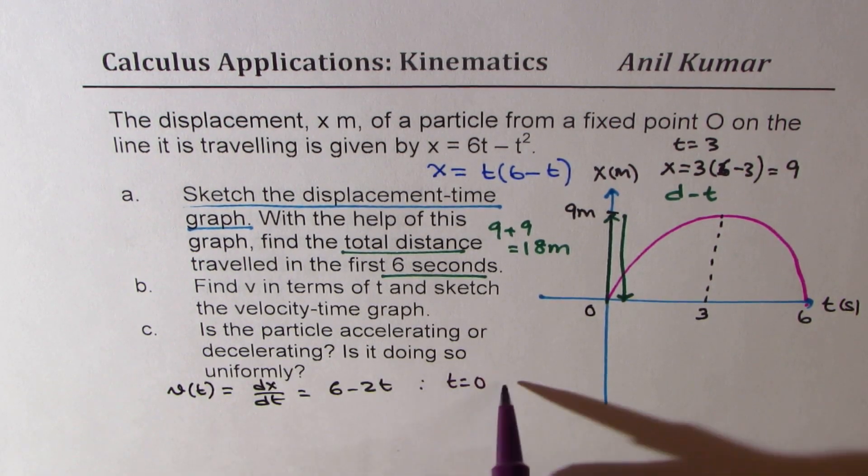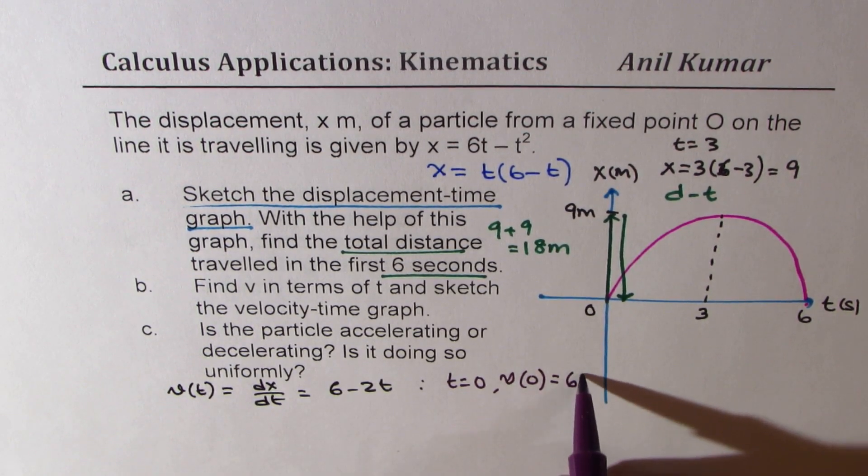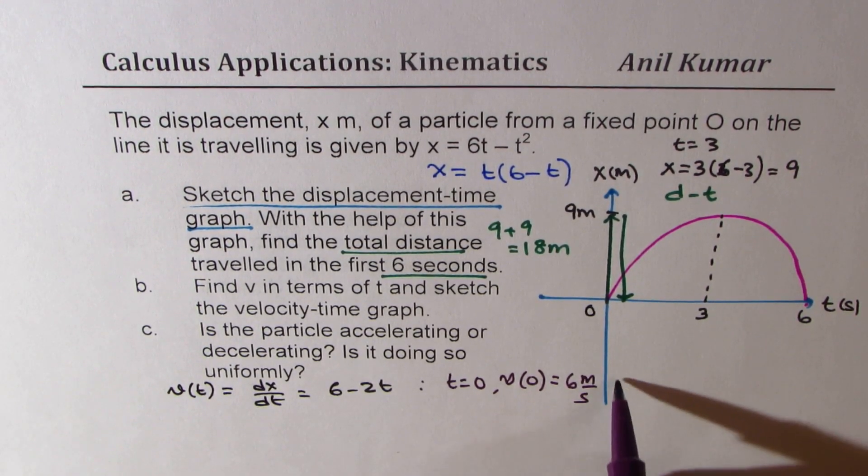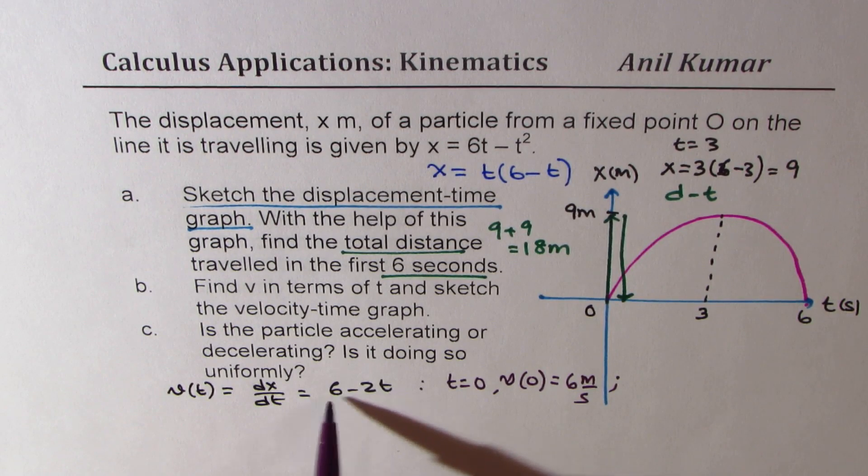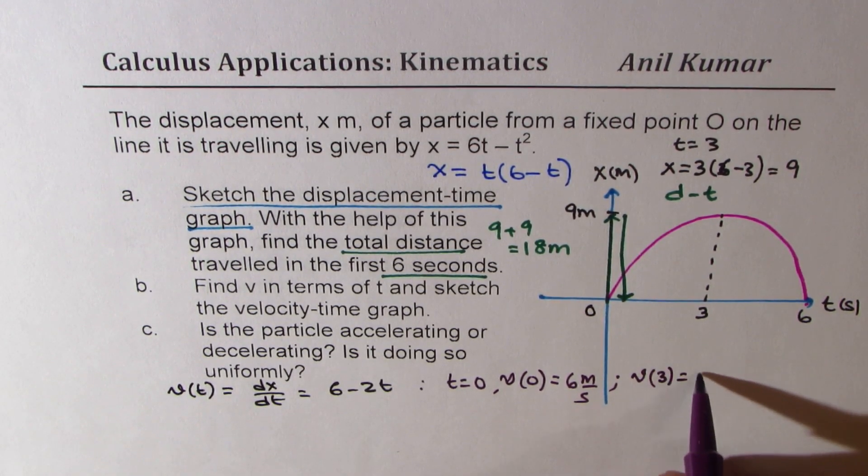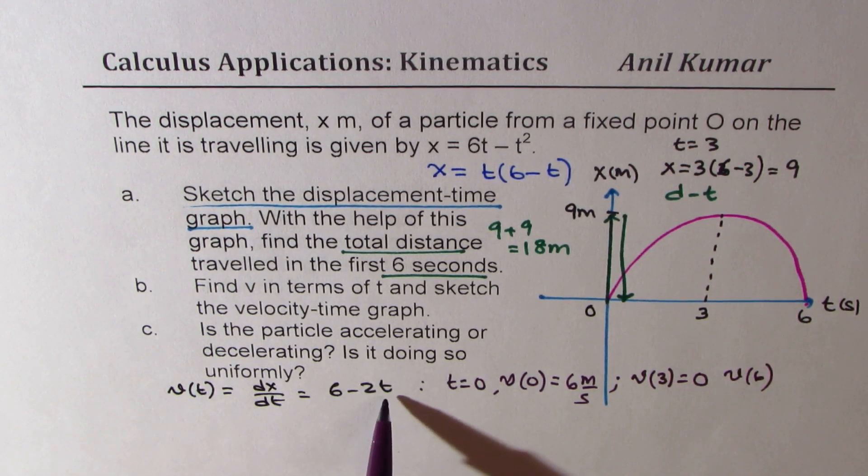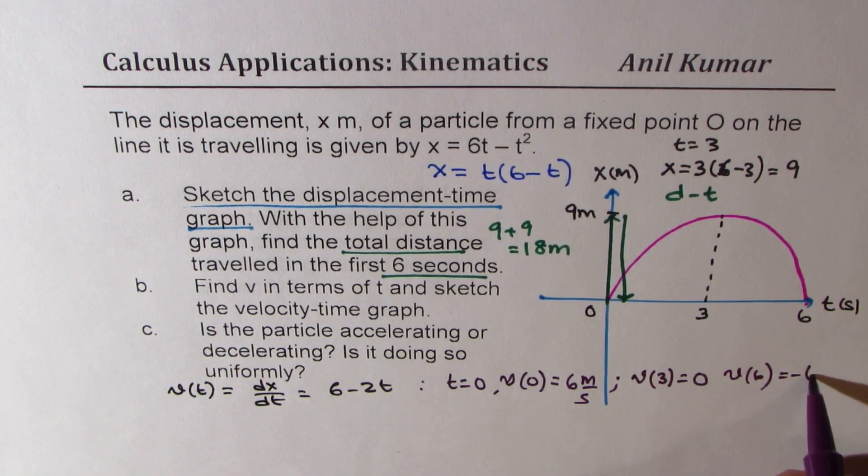So if t equals 0, I get v of 0 as equal to 6, 6 meters per second. At t equals 3 it is 0, so velocity at 3 is equal to 0. And what is the velocity at 6? If I substitute 6 here, I get 6 minus 12 which is minus 6 meters per second.